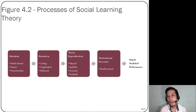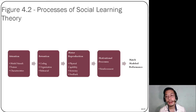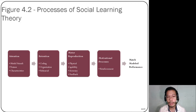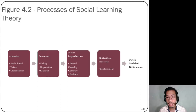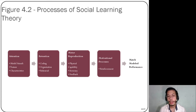Figure 4.2 illustrates the process of social learning theory. It starts with attention — the stimuli, training context, and person characteristics. Second is retention — how information is retained, starting with coding, schemas, and organization of codes in the brain. Next is motor reproduction — how the person translates what has been retained into physical movements. Finally, motivational processes — reinforcements — lead to matched model performance.